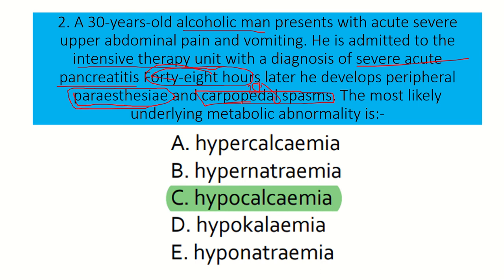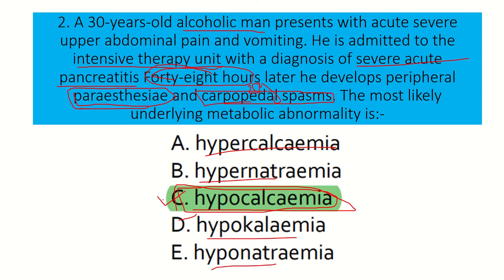These two clinical features — paresthesia and carpopedal spasm — are the main features of hypocalcemia. In acute pancreatitis, calcium is reduced. The other metabolic abnormalities seen are increased glucose and increased lipid levels, but the most important here is hypocalcemia. The other options — hypercalcemia, hypernatremia, hypokalemia, and hyponatremia — are not correct in this question. Therefore, our final answer is hypocalcemia.